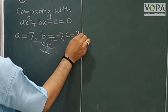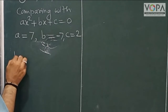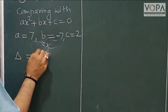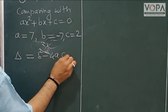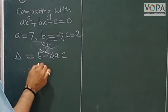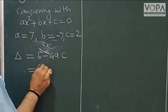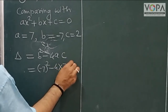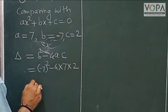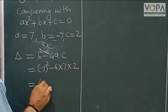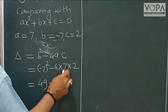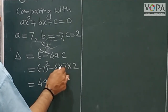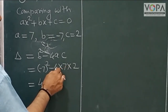We have to find the value of b²-4ac. Here b means minus 7, so b² is minus 7 squared, minus 4 into a which is 7, into c which is 2. That gives us 49 minus...